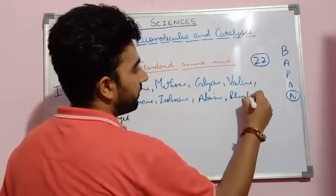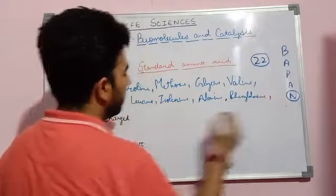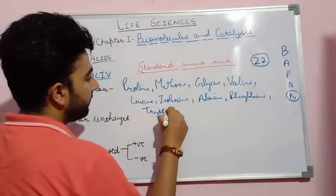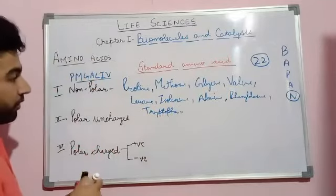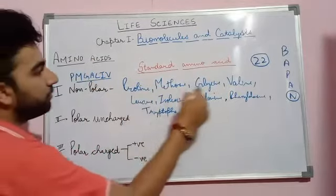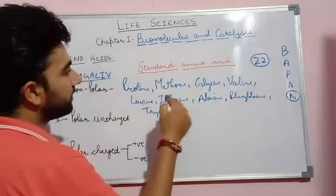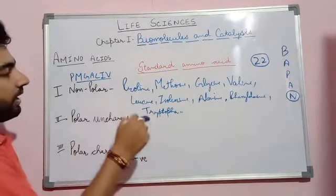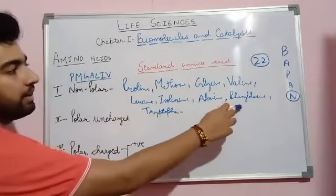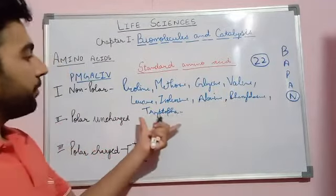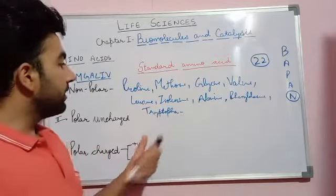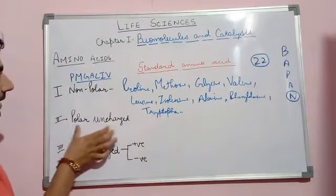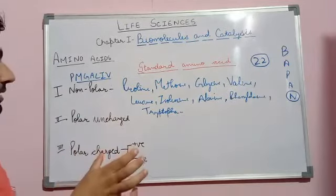The two additional non-polar amino acids are phenylalanine and tryptophan. So in total there are nine non-polar amino acids. Phenylalanine contains a phenyl ring, and tryptophan contains an indole ring. Then we will talk about the second type, which is polar uncharged amino acids.